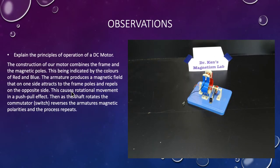What are our observations? We had to explain the principles of operation of a DC motor. The construction of our motor combines the frame and magnetic poles, this being indicated by the colors of red and blue. The armature produces a magnetic field that on one side attracts the frame poles and repels on the opposite side. This causes rotational movement and gives you that push-pull effect. Then, as the shaft rotates the commutator, the switch reverses the armature's magnetic polarities. And the process just repeats.